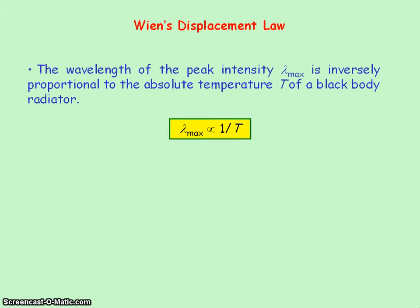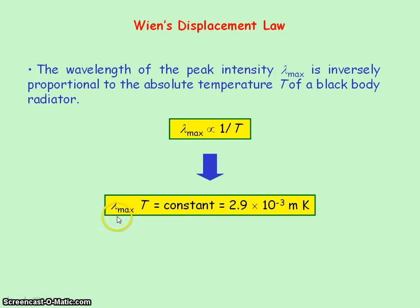So Wien's displacement law states that the wavelength of the peak intensity is inversely proportional to the absolute temperature of the black body. So that means that the peak wavelength multiplied by the absolute temperature equals a constant, and this constant is equal to 2.9 times 10 to the minus 3 meters Kelvin, with units of wavelength times the units of absolute temperature.